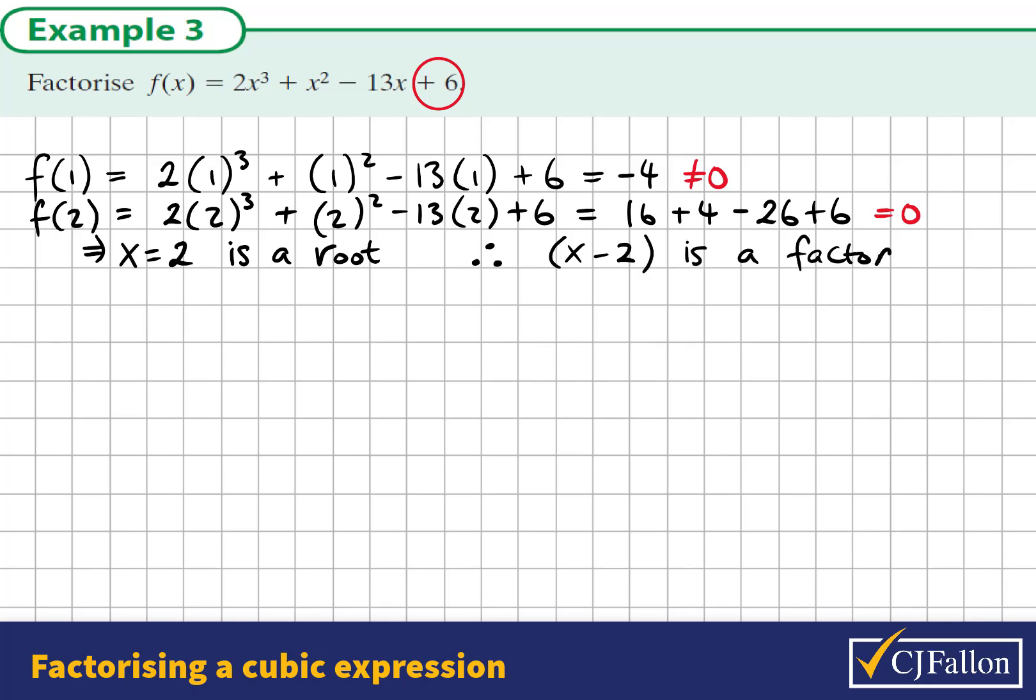Now that we've found one of the factors, we could divide our cubic function by this factor, and it should go in evenly. We should end up with a quadratic factor that relates to this. So I'm going to use the array method to do this. We know where to place the 2x cubed and the 6.